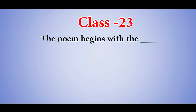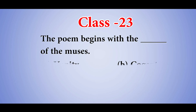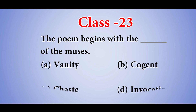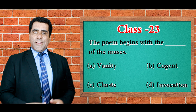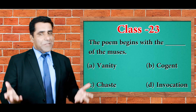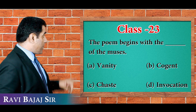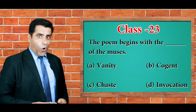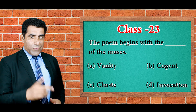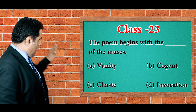The poem begins with the dash of the muses and the options are Vanity, Cogent, Chaste, and Invocation. Aap sabhi ka swaagat hai is vocab session mein. Aapke saamne ek question, 4 options. You have to find out the right answer. So, what do you think?